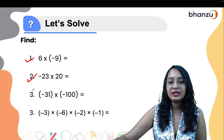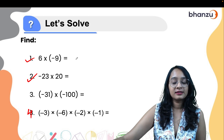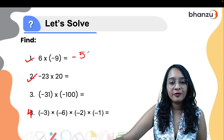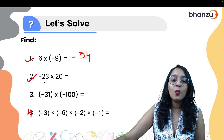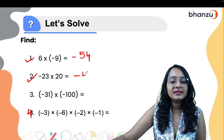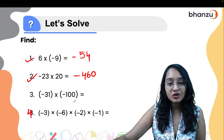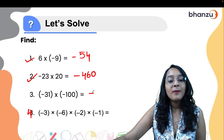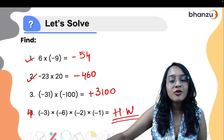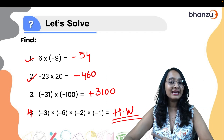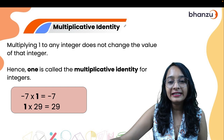Let us solve a few questions. Minus 9 multiplied with plus 6: the answer is minus 54. Minus 23 multiplied with plus 20: one is positive, one is negative, so the answer is a negative integer. For questions three and four, both numbers are positive so the answer will be positive — take those as homework and let me know in the comment section whether the answer is negative or positive.